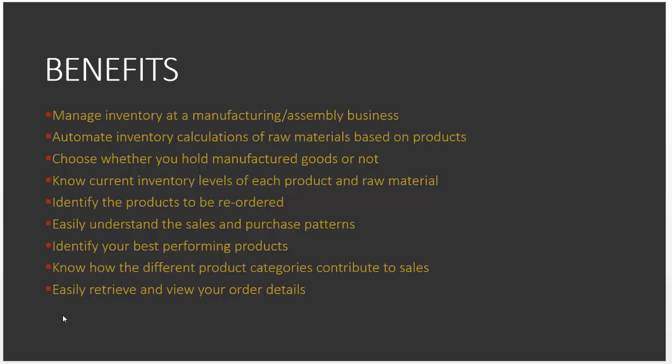You can identify the top 10 best-performing products by sales amount and categorize products and raw materials to better understand how different categories contribute to your sales. You can enter all order details in one place for easy retrieval. Best of all, this is all within Excel — an application you're already familiar with — using only simple formulas and conditional formatting, with no complex programming, no macros, and no security concerns. Now let's take a quick look at the template.